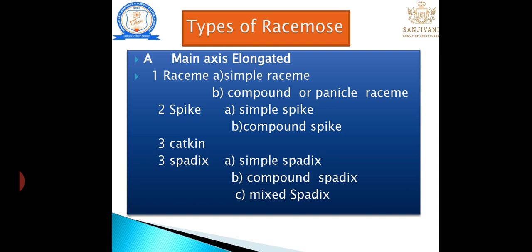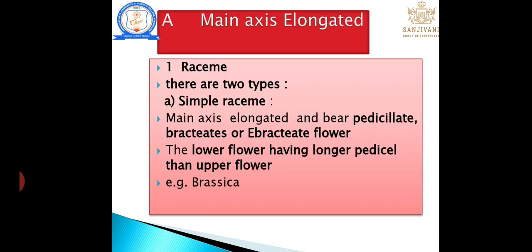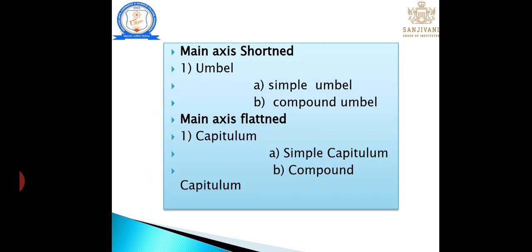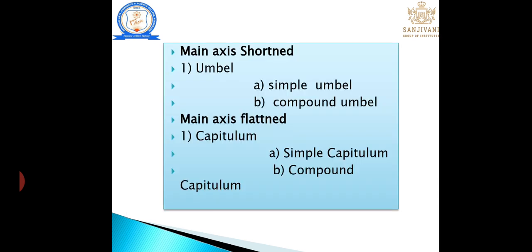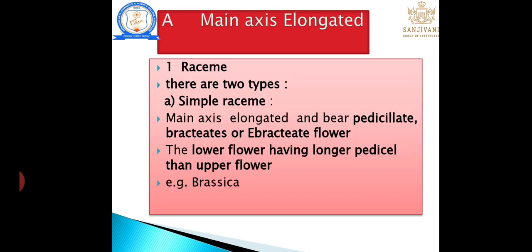Racemose type is classified into three categories: main axis elongated, main axis shortened, and main axis flattened. Main axis elongated includes: raceme (simple and compound), spike (simple and compound), catkin, and spadix (simple, compound, and mixed). Main axis shortened includes: umbel (simple and compound). Main axis flattened includes: capitulum (simple and compound).